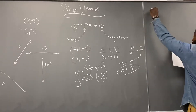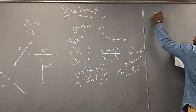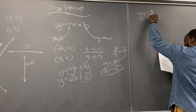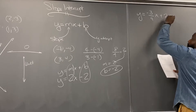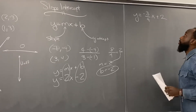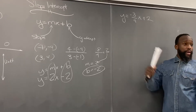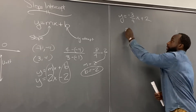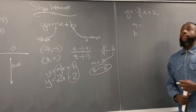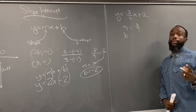Let's look at number seven: y equals negative three over four x plus two. This is written in slope intercept form. What would be the slope — what is M and what is B? M is negative three over four — that is the slope. And B is two.